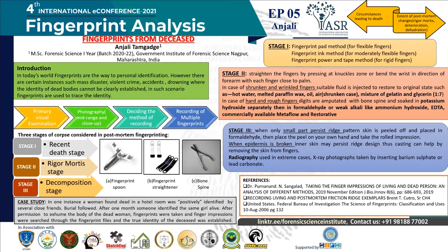Stage 3 is the most difficult stage to collect fingerprints — only a small part of the ridge pattern may persist. We have to peel off the skin using xylene solution and place it in formaldehyde to stop further decomposition and harden it. Then the peel is placed on the examiner's own hand and roll impressions are taken. In cases where the epidermis is broken and the inner skin possesses the ridge design, a similar skin peel and water technique can be used to identify the fingerprints. If all fails in extreme cases where tissue is decomposed badly, x-ray photography can also be used.